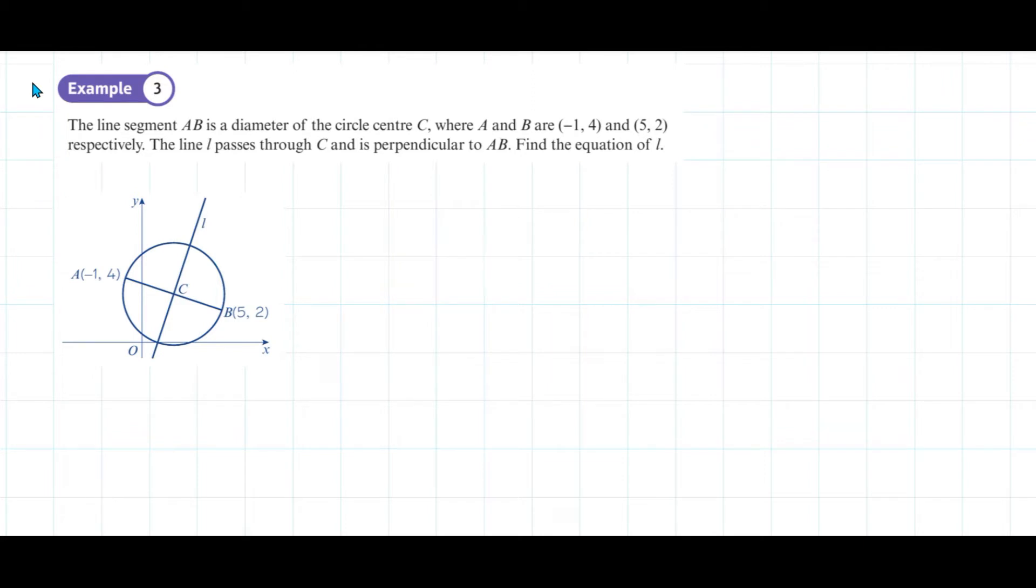This is example 3 from page 116 of the M1 textbook. The line segment AB, here's our line segment AB, is the diameter of a circle center C. Here's our circle, there's the center.